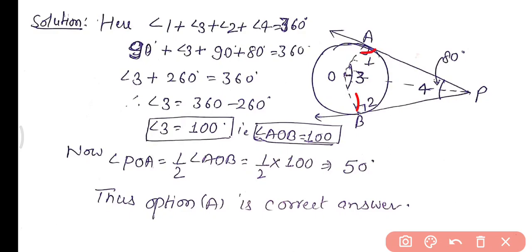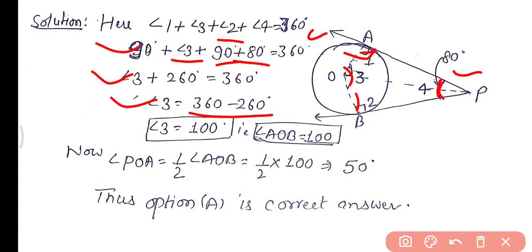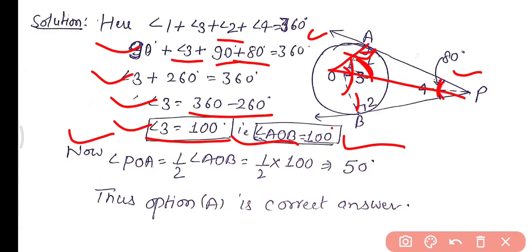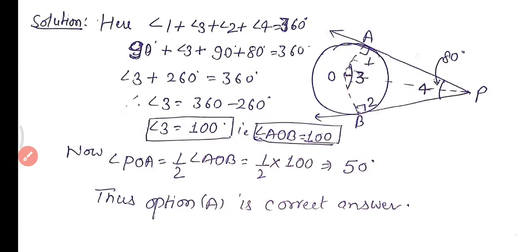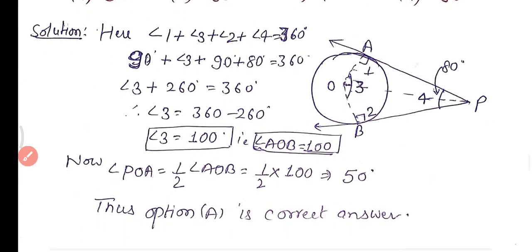Using the angle sum property of quadrilateral OAPB: angle OAP = angle OBP = 90° (radius perpendicular to tangent), and angle APB = 80°. So angle AOB = 360° − 90° − 90° − 80° = 100°. Since OP bisects angle AOB by symmetry, angle POA = ½ × 100° = 50°. Thus option A (50°) is the correct answer.